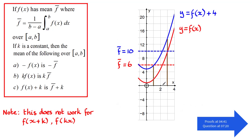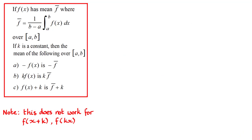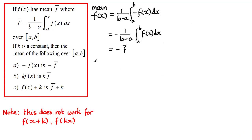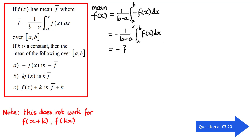As I said earlier, you might be asked to prove these results — they're fairly straightforward. For the proof of part a, the mean of negative f of x: by definition, it's going to be 1 over b minus a times the integral from a to b of minus f of x with respect to x. I can pull the negative one out the front, and what we have inside is f bar. So we end up with negative f bar.